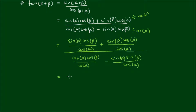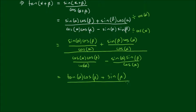Simplifying this, sin of alpha divided by cos of alpha equals tan of alpha, and cos of beta remains as it is. Plus, cos of alpha divided by cos of alpha equals 1, and sin of beta remains. On the bottom, cos of alpha divided by cos of alpha equals 1, and cos of beta remains, minus tan of alpha and sin of beta remains.